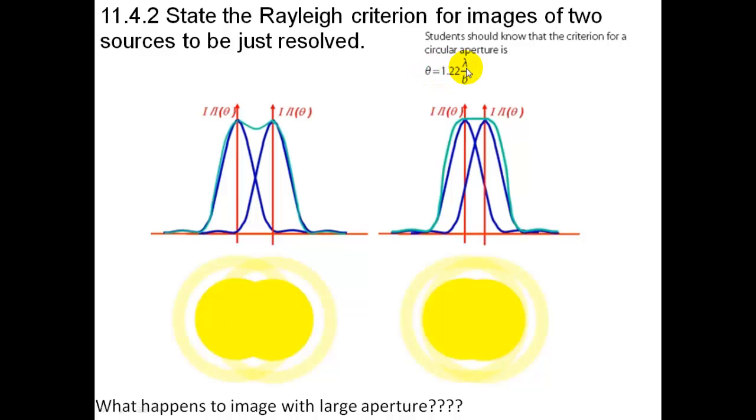So you need to have a very short wavelength or a large aperture to be able to get a better resolution. So with a circular aperture it's 1.22 lambda over b. With a slit which allows more radiation, it's going to be lambda over b.